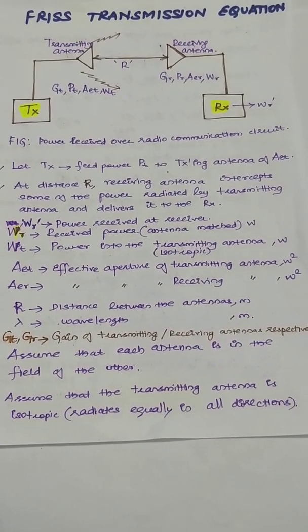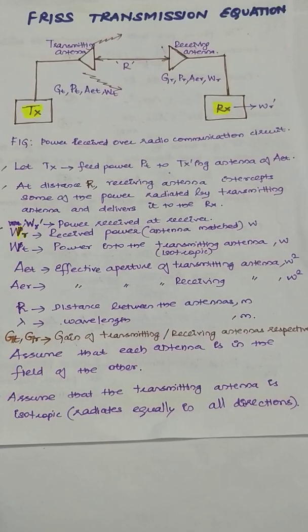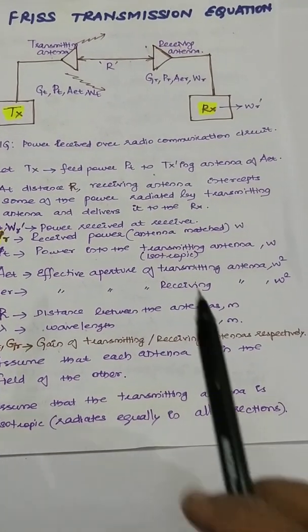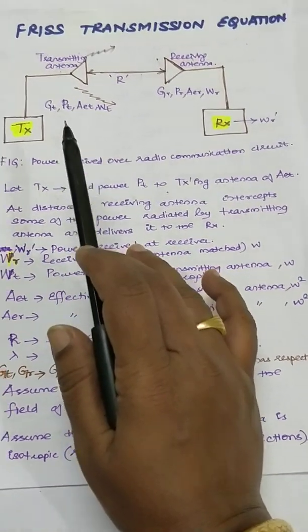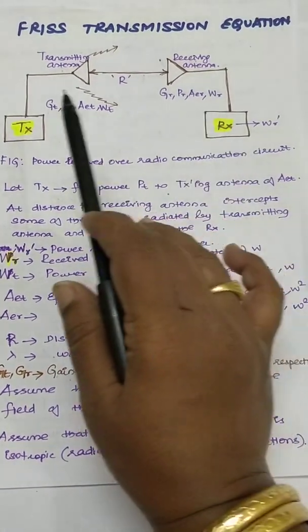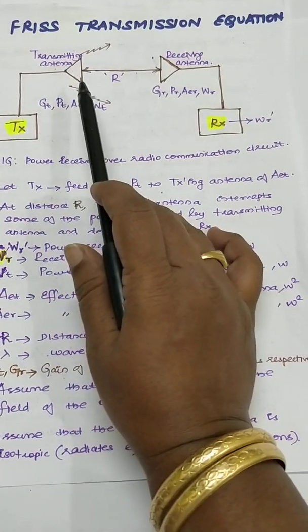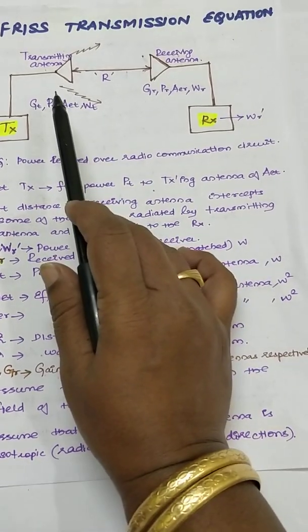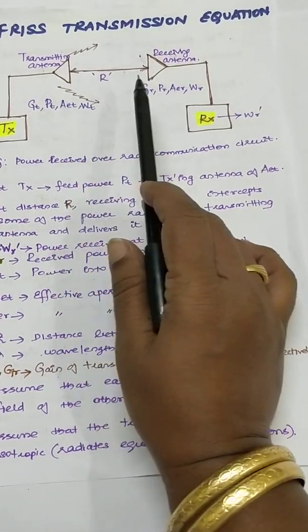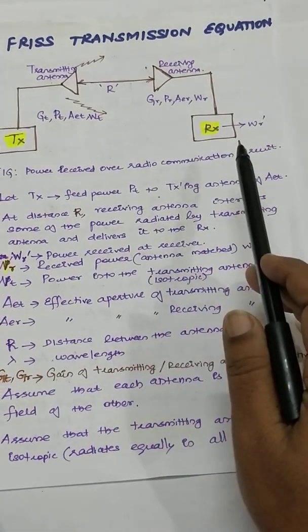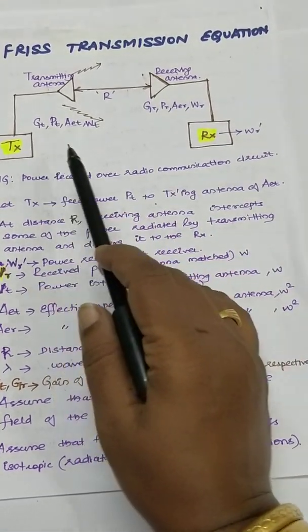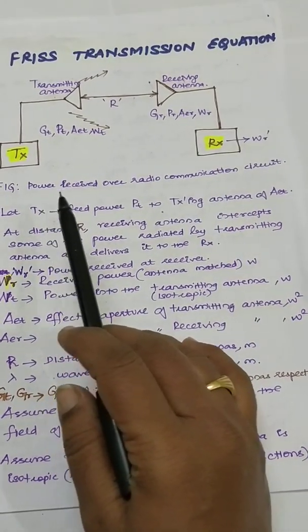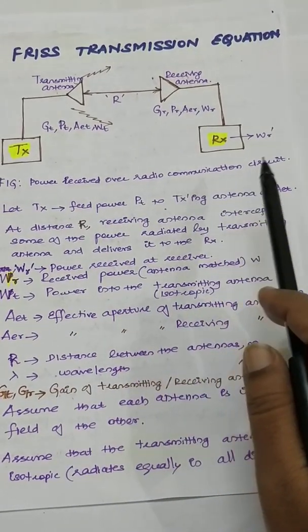Good day students. The continuation topic is the Friis transmission equation. In the Friis transmission equation, look on to the block diagram. You have a transmitter, you have a receiver. The transmitter is connected to a transmitting antenna and the receiver is connected to a receiving antenna. The figure defines the power received over the radio communication circuit.